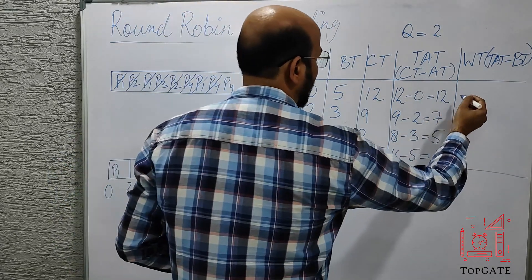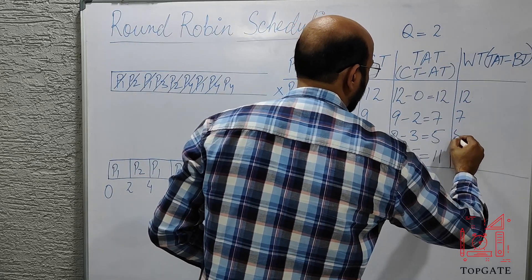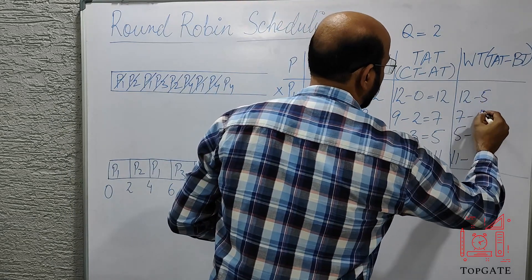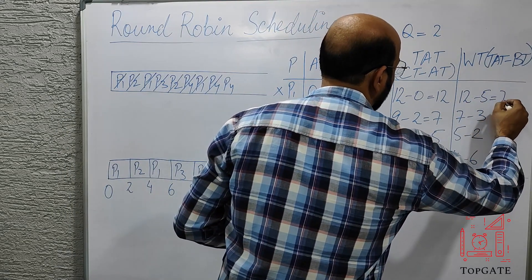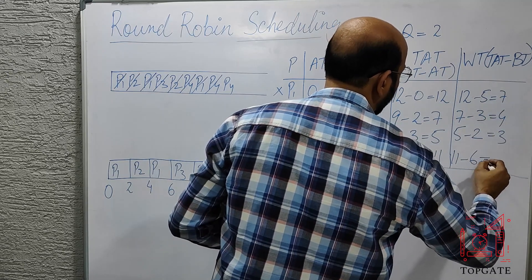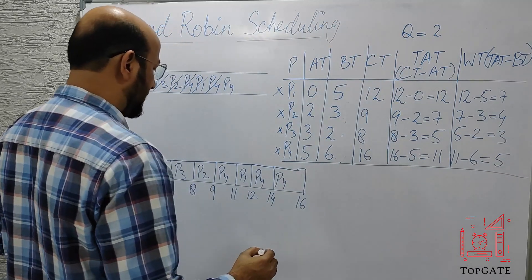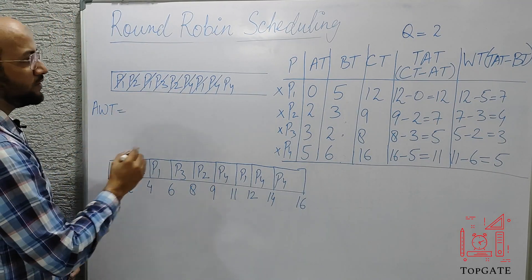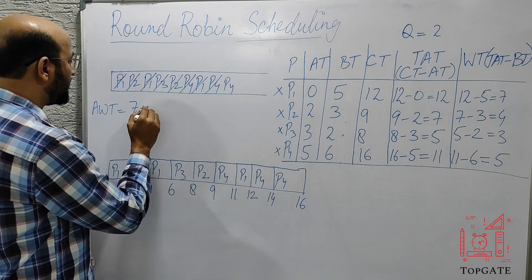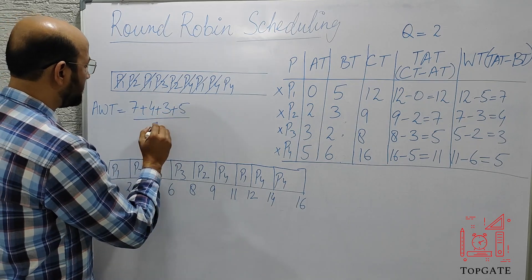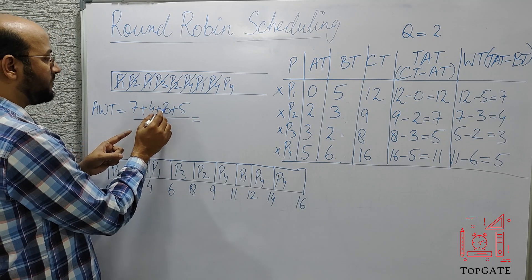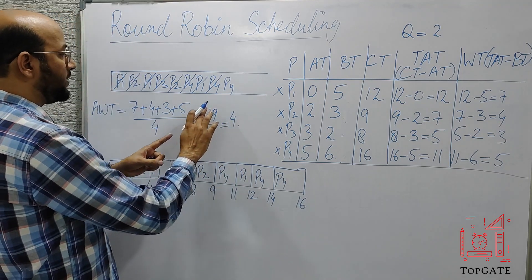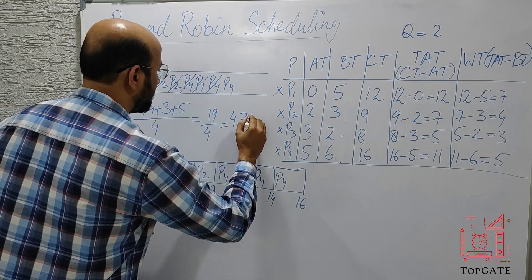Waiting time = turnaround time − burst time. With turnaround times 12, 7, 5, 11 and burst times 5, 3, 2, 6: P1 = 12 − 5 = 7, P2 = 7 − 3 = 4, P3 = 5 − 2 = 3, P4 = 11 − 6 = 5. Average wait time = (7 + 4 + 3 + 5) / 4 = 19 / 4 = 4.75.